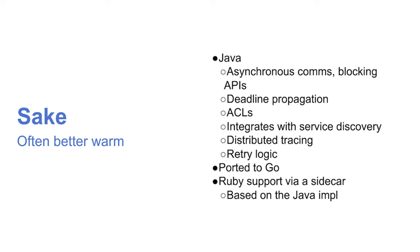Sake gave us several important things over JSON over HTTP: asynchronous communications with both blocking and non-blocking APIs; deadline propagation, so when making a call several services deep, the deadline is carried through rather than using a coarse pre-configured timeout; ACLs for security defining who can call what; and service discovery — very important when services are coming up and going down all the time and you're routing across data centers.